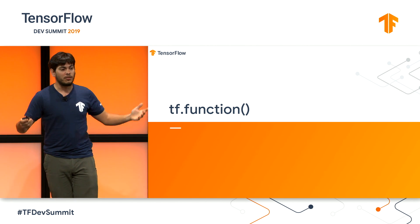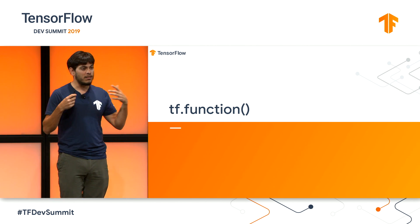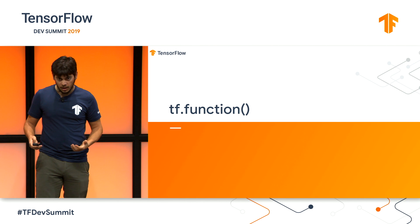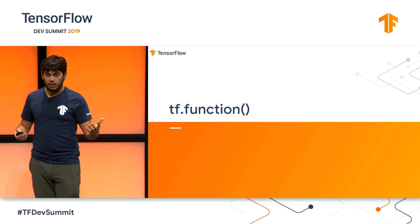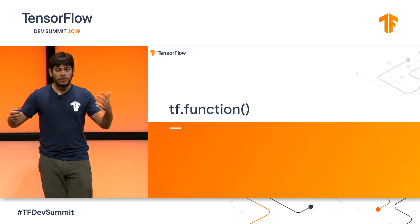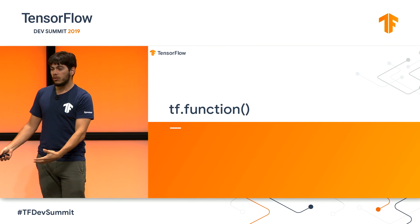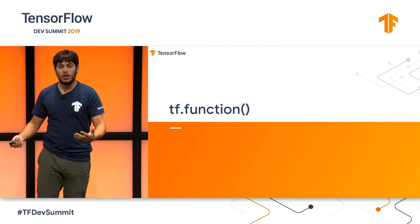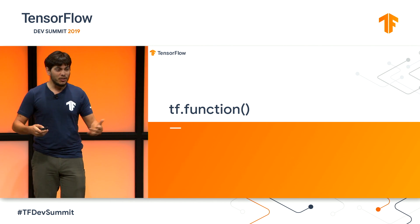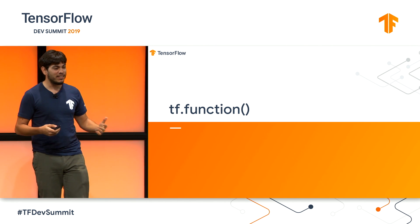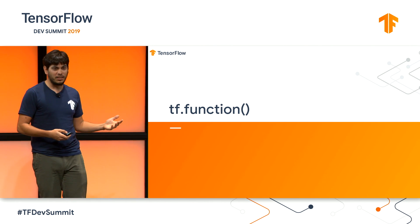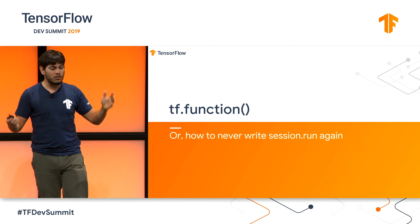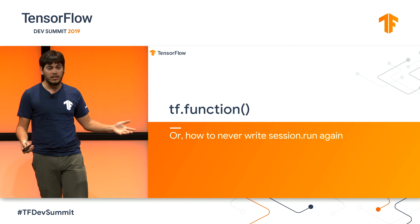We're calling it tf.function, because that's the main API entry point. With tf.function, many things you're used to are going to go away, and hopefully you're not going to miss them. The first one that goes away — and I really think no one in this room is going to miss it — is that you'll never have to use session.run anymore.